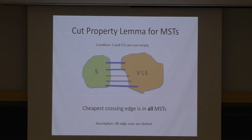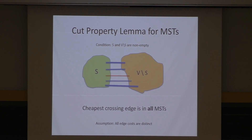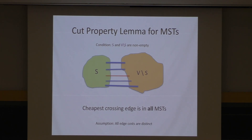You look at any possible cut in the graph — a cut is dividing the set of vertices into two non-empty parts — and look at all crossing edges, which have one endpoint in one part and the other endpoint in the other part. The cheapest crossing edge is always unique since all edge costs are distinct. The cut property lemma says that edge is going to be present in all possible MSTs. We just need the fact that it is always safe to add the cheapest crossing edge for any cut.